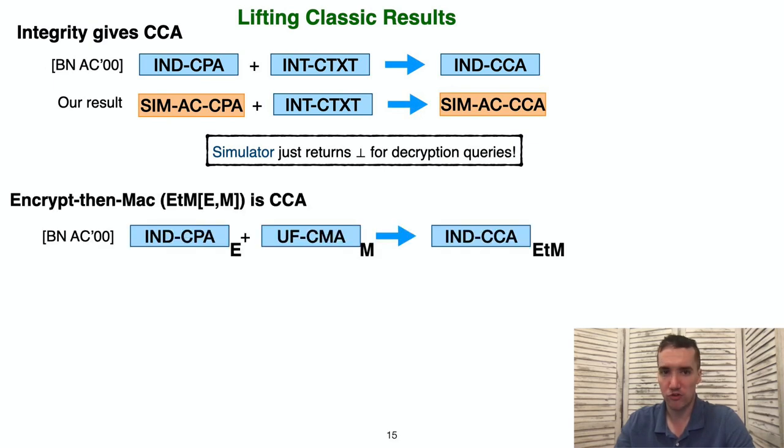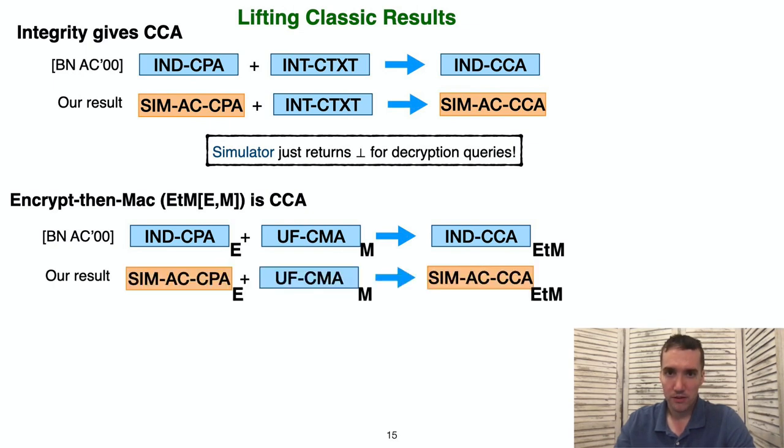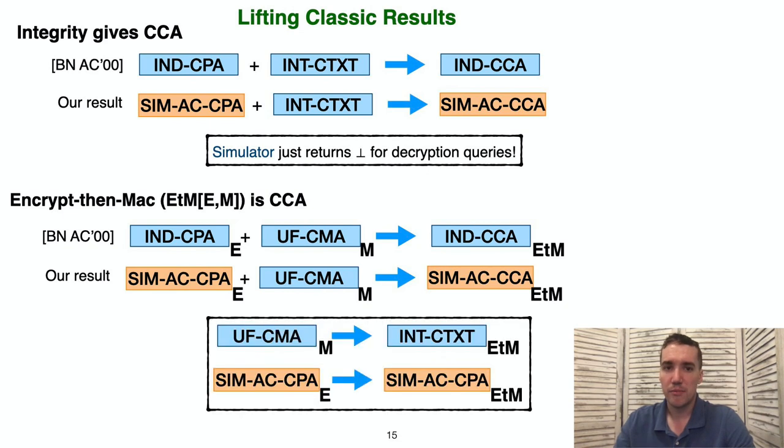Next, consider the encrypt-then-MAC construction using an encryption scheme E and a message authentication code M. Bellare and Namprempre showed that such a scheme will be IND-CCA secure assuming that E is IND-CPA secure and M is UF-CMA secure. We again obtain the analogous result using our versions of these definitions. The flow of proving this mirrors that originally used by Bellare and Namprempre. We borrow the results that show security of the MAC gives integrity of ciphertexts. Then we show that SimCPA security is preserved by the encrypt-then-MAC transformation. And with these two results, we can then call back to the first result we discussed on this slide to complete the proof showing that CCA security is achieved.